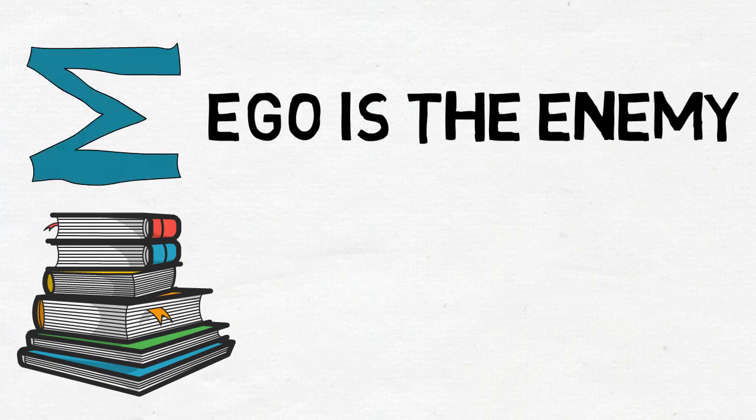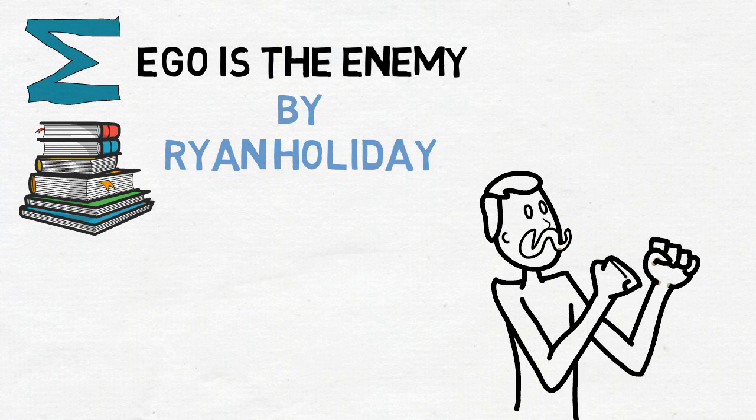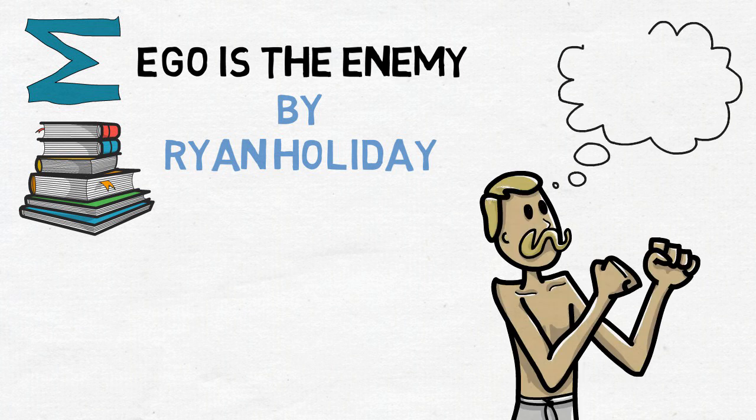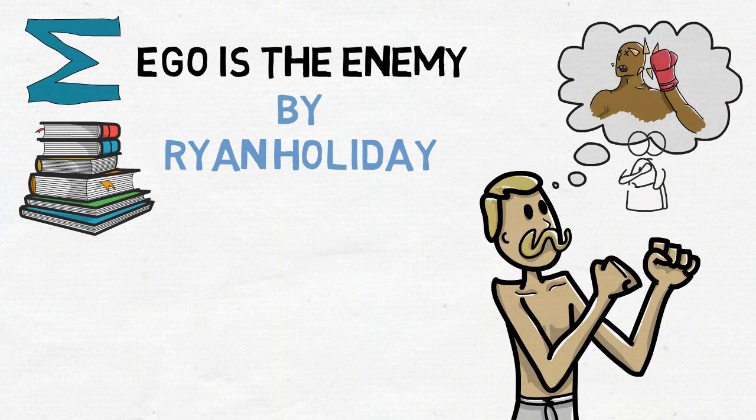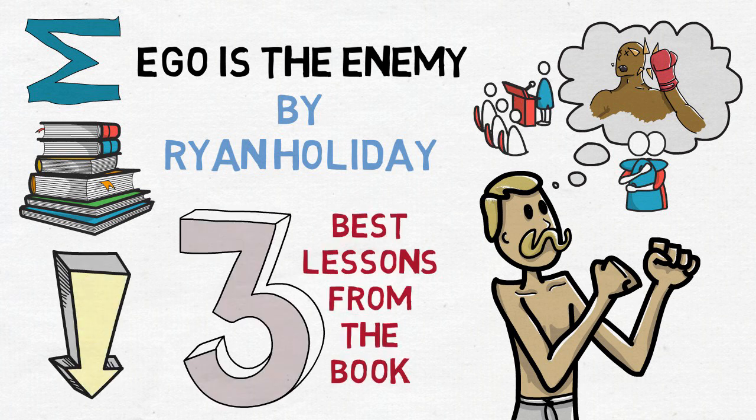Summary of Ego is the Enemy by Ryan Holiday. Ryan Holiday uses his book, Ego is the Enemy, to relate the negative influence ego has on our ability to make good judgment calls that help us achieve and maintain success in our personal and professional lives. In this video, I'll explain three of the best lessons from the book.